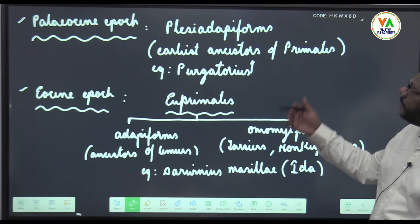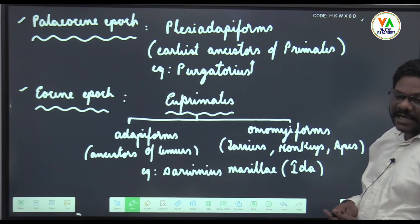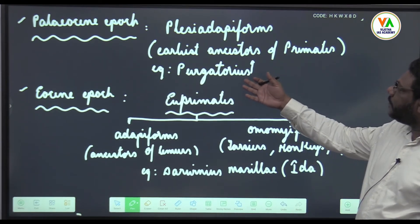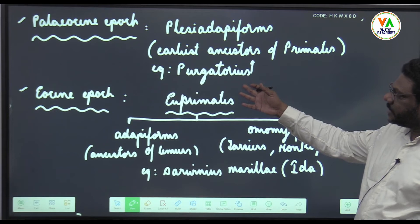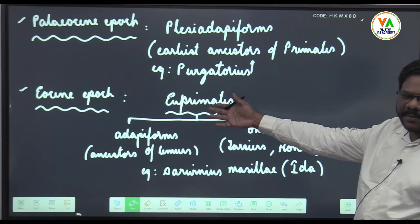Here you have some forms like Plesi-Adapiforms, which are the earliest ancestors of primate mammals. Example is Purgatorius. Here you have U primates in Eocene. U means true, so true primates.